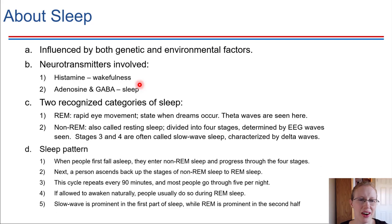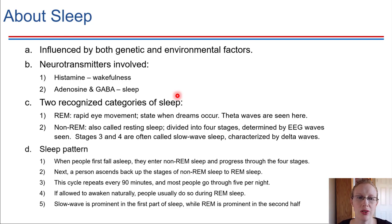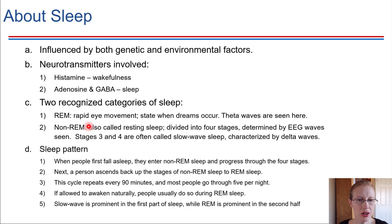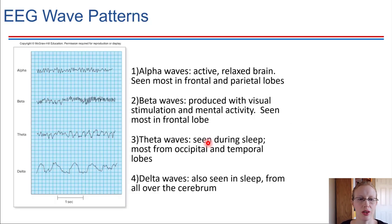During sleep, there are two generally recognized categories: REM and non-REM. REM refers to what your eyes are doing while asleep — either resting still, or moving all around, which is called rapid eye movement. REM sleep is generally when we're dreaming, and this is when we see theta waves. Non-REM sleep is also called resting sleep, and it's characterized by delta waves — called slow wave sleep because these waves appear slower and don't occur as frequently.